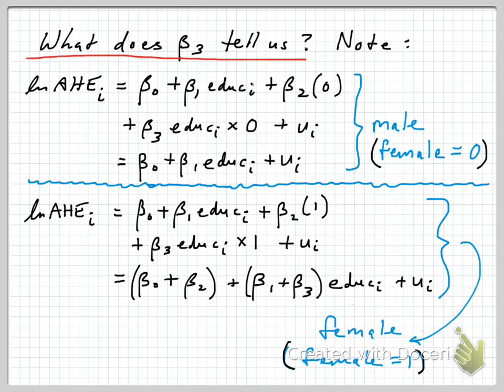To do that, let's unpack this equation and see what it implies for males and females separately. Starting with the males, we know if you're male, the value of the female variable is 0 for you.